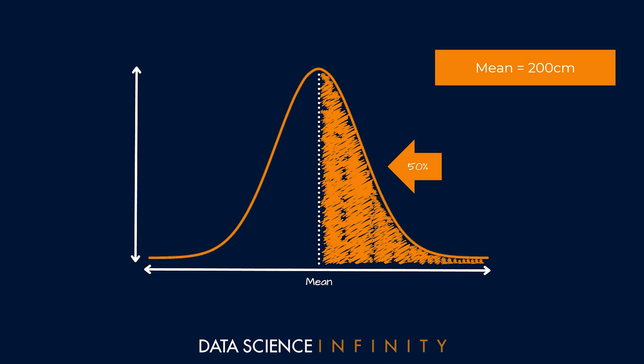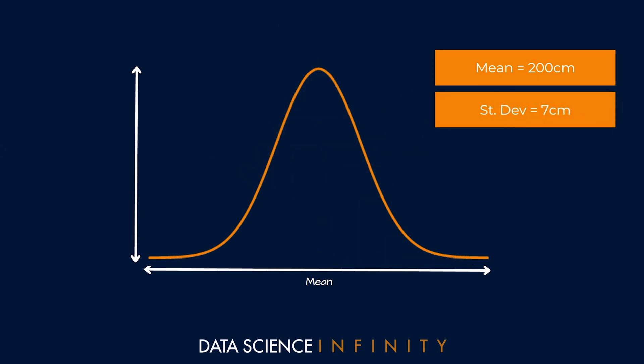Let's say that we know the standard deviation of these heights is 7 centimeters. This extra knowledge gives us much more information than we had when we just knew the mean. If we assume that the data is indeed normally distributed, then we can start to understand what proportion of players will be between or above and below certain heights.